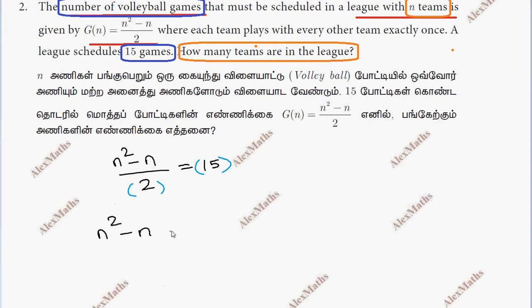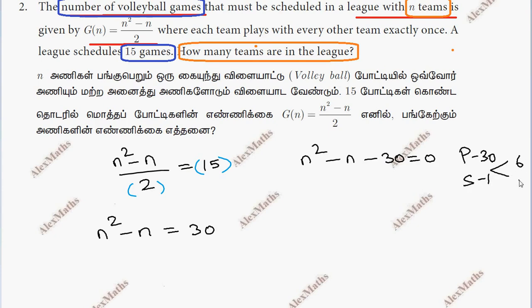Then n squared minus n equals 30. Splitting the middle term: the sum is minus 1 and product is minus 30. So we split as minus 6n plus 5n, giving n squared minus 6n plus 5n minus 30 equals 0.